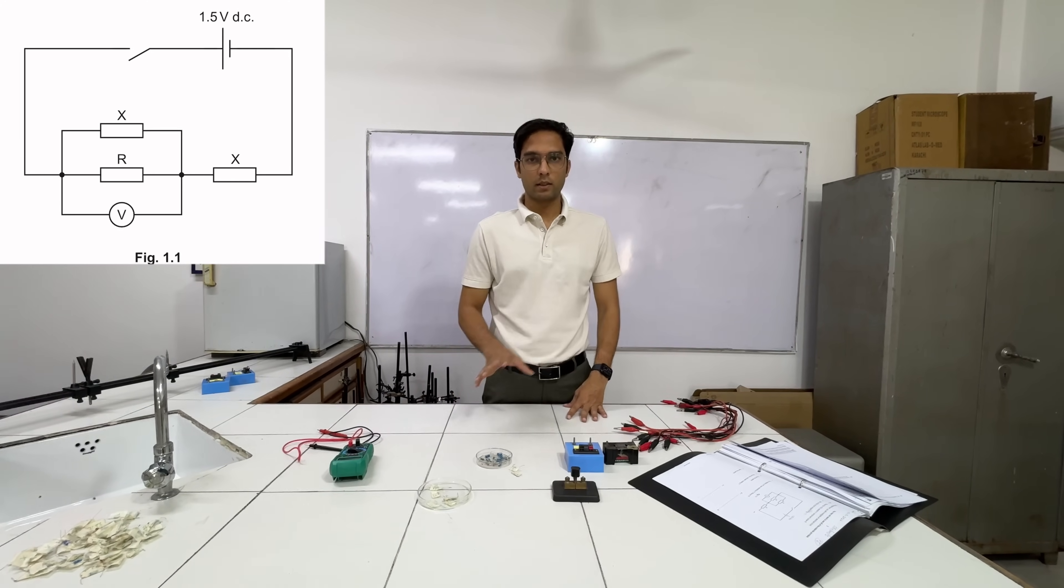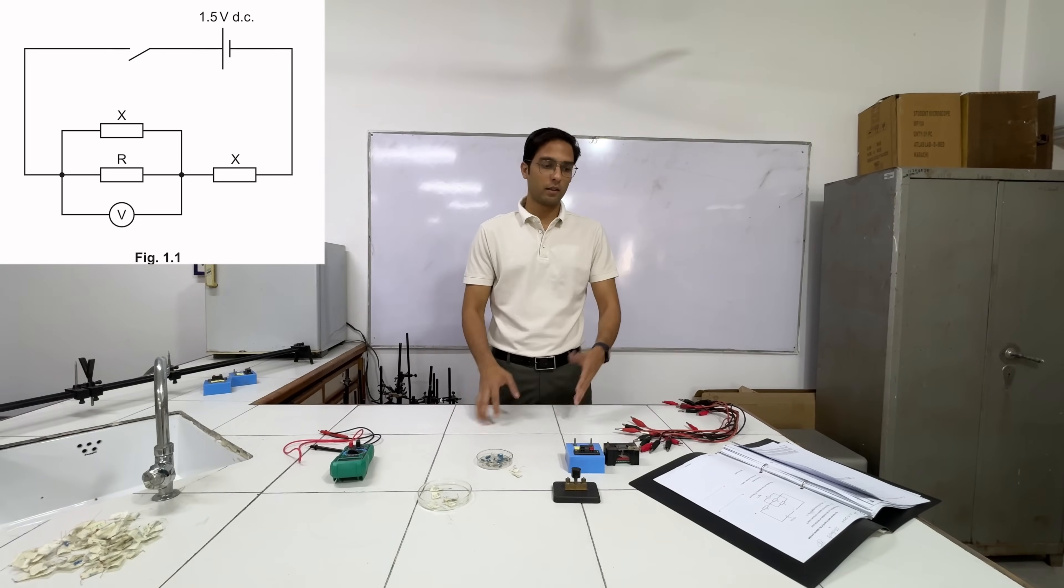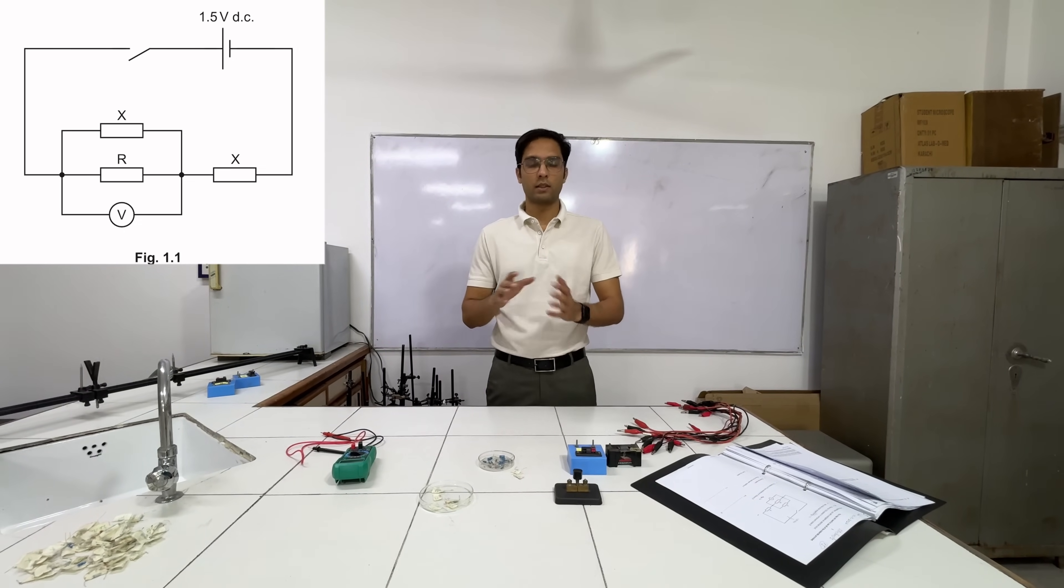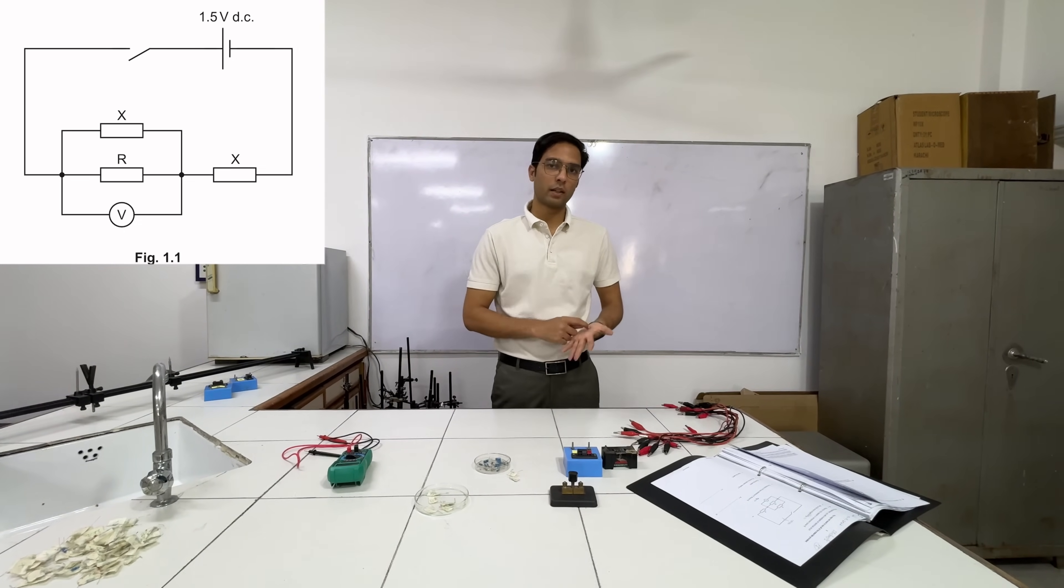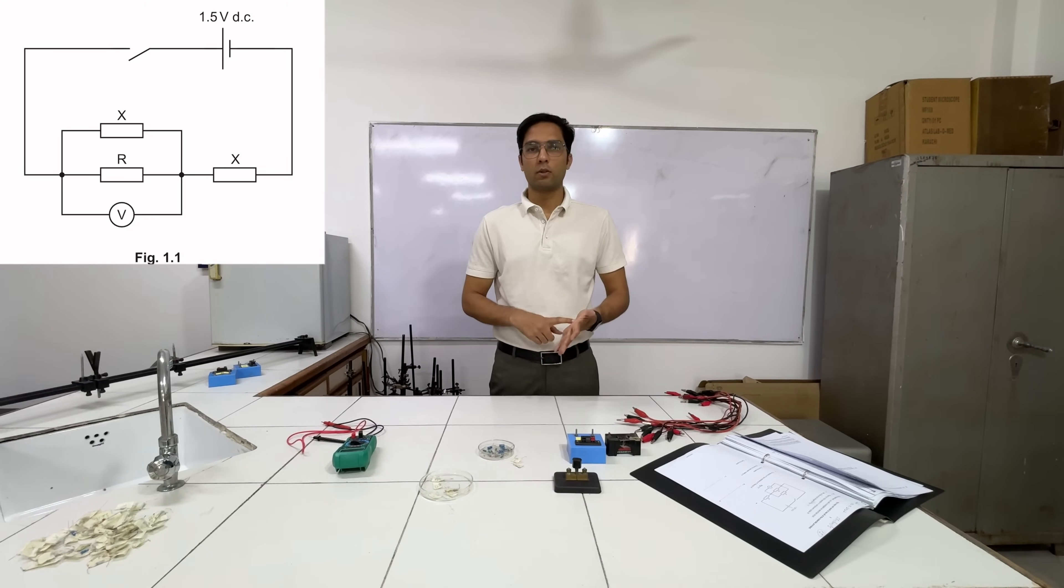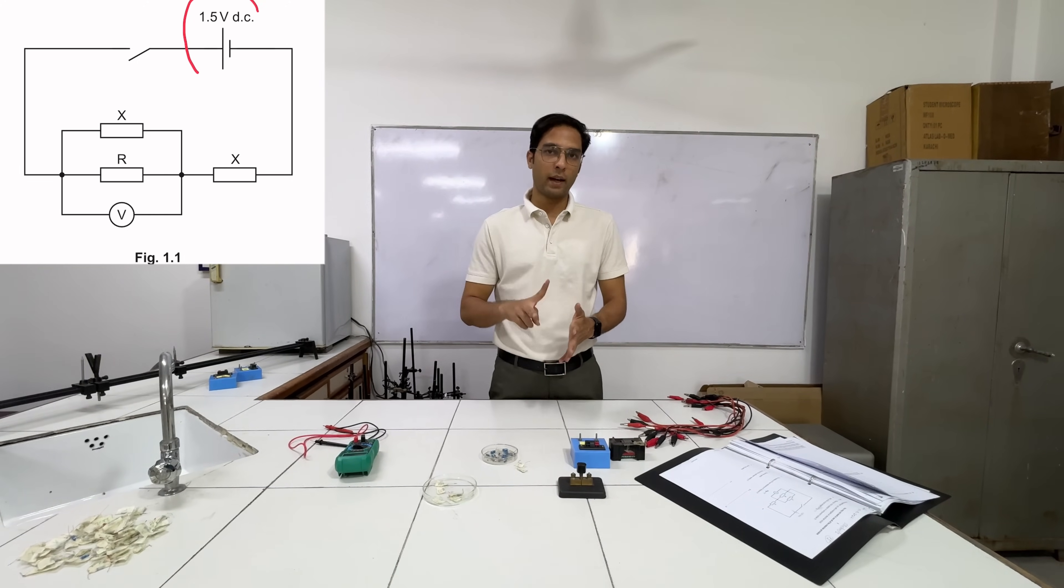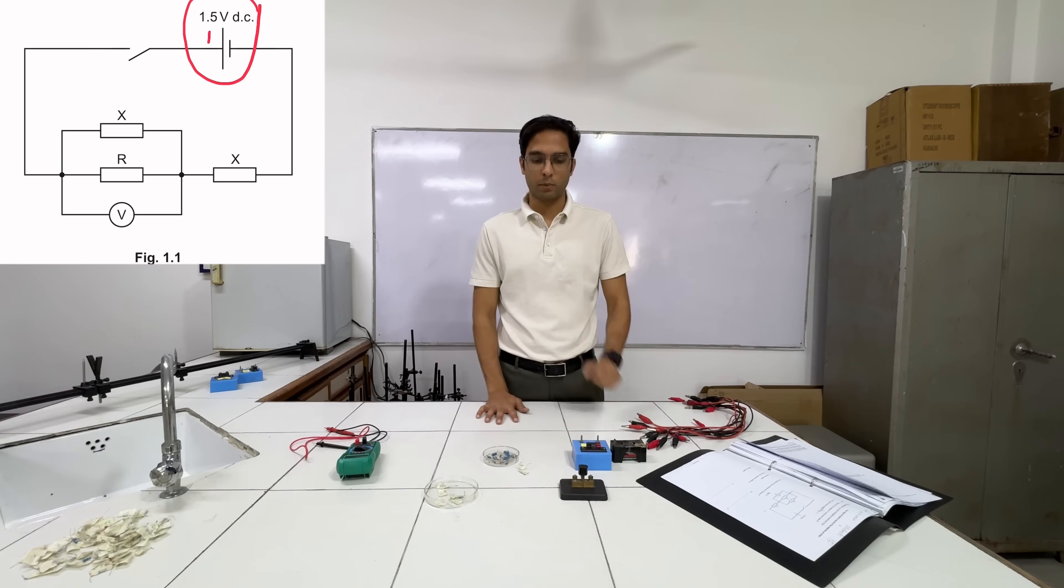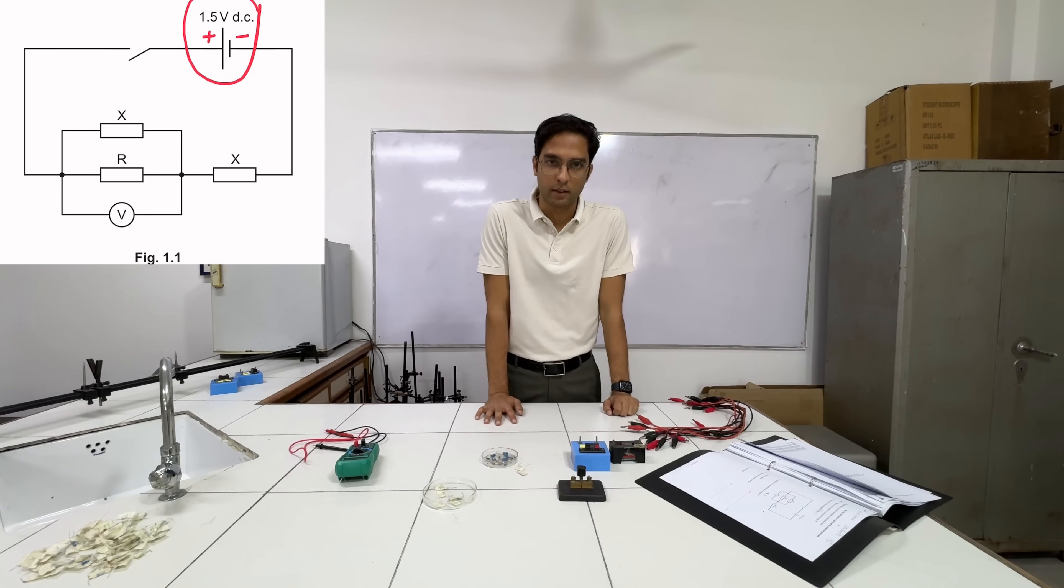In this experiment, as you can see on the screen, there is a parallel combination with a series combination. In the parallel we need to connect a voltmeter, we need to connect the switch, we need to connect X and there are two X resistors and then a 1.5 volts battery.